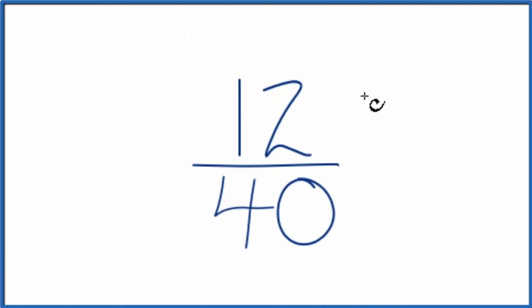What we're trying to do is find another fraction that has the same value, an equivalent fraction to 12 over 40, but we want it in lowest terms.